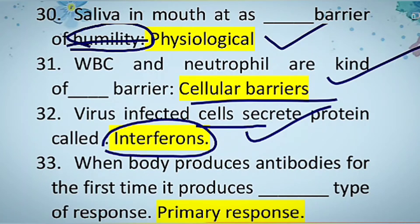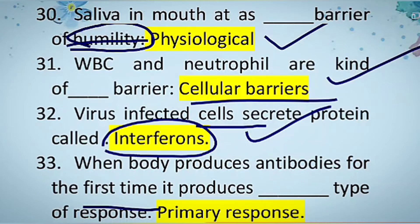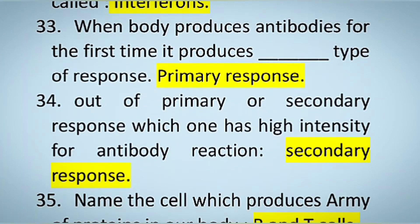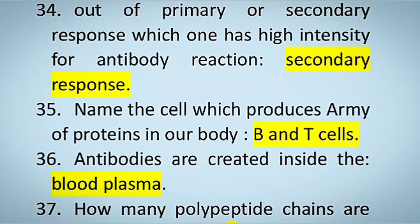All NCERT-based questions are very important for your competitive exams and one-mark questions. The next question: when the body produces antibodies for the first time, which response will it be? When an individual comes into contact with an infection for the first time, the body produces a primary immune response.